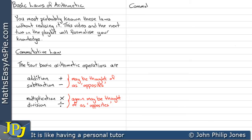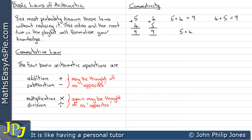Let's consider the following property. We're going to take five and add it to four and we get nine. Now we take four and add it to five to get nine. So five plus four equals nine and four plus five also equals nine. So we can say five plus four equals four plus five.